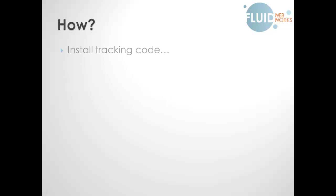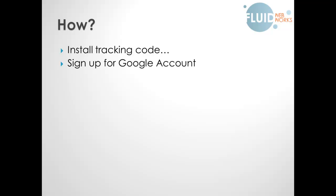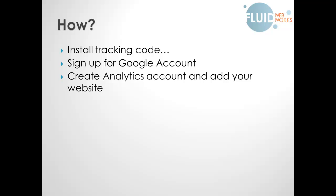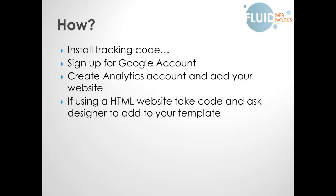So how do you get started? You need to install some tracking code. To do that, you need to sign up for a Google account if you don't already have one. Go to Google, and in the top right-hand corner you should get an opportunity to sign up. Once you have a Google account, then you need to create an Analytics account. Go to analytics.google.com, and you can create an account and then add your website to that account.